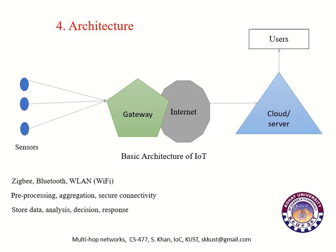The gateway can perform many functions such as pre-processing of data, aggregation of data, as well as providing secure internet connectivity. The cloud or servers are used to store data, analyze the data, and make decisions. The decisions or responses are then communicated to the users.